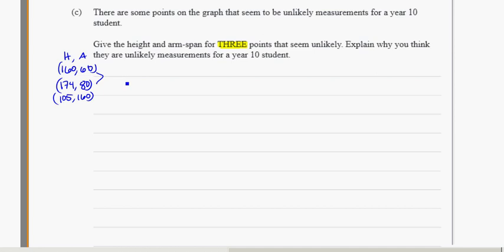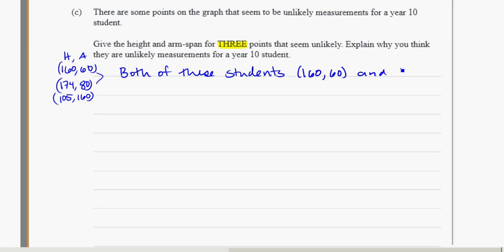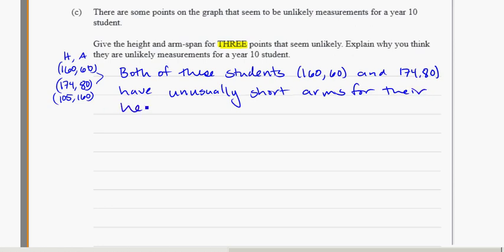Those are the points - height and arm span. Explain why you think they're unlikely measurements. Well, these two here, and I might be specific: both of these students, 160/60 and 174/80, have unusually short arms for their height.